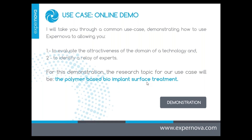For this demonstration, the research topic for our use case will be polymer-based bioimplant surface treatments. Biomaterials are by definition materials that are biocompatible with the human body. However, like all materials, they can undergo alteration in the biological environment of their use — this is called biodegradation. In order to minimize this interaction, it is necessary to perform a surface treatment to improve their biocompatibility. My company works in biotechnology and has developed a technique to cover the surface of an implant with a polymer-based material to improve its biocompatibility. I wish to complete my studies to assess the attractiveness of the field of this technology and to identify a relay of experts. So let's switch to the Expernova platform.